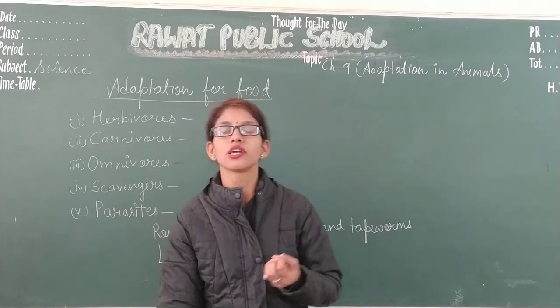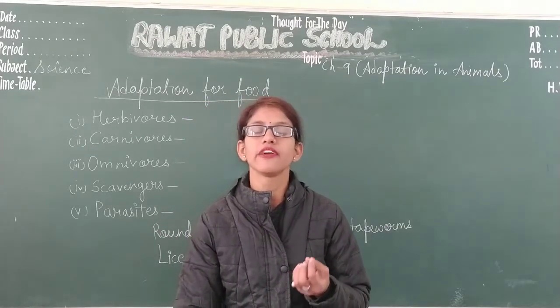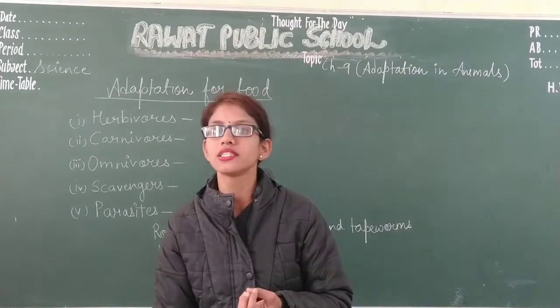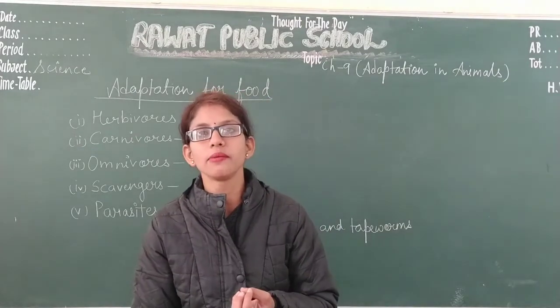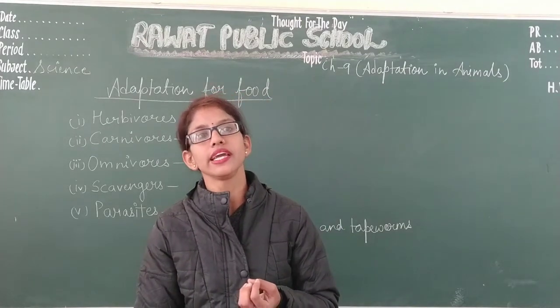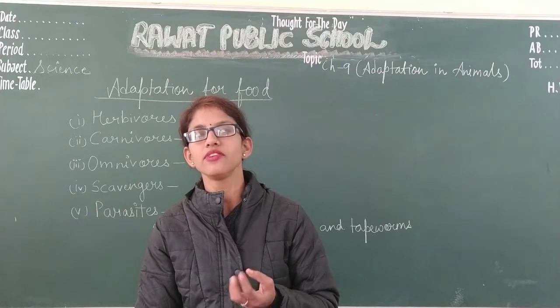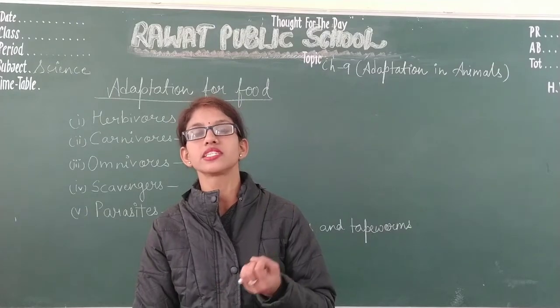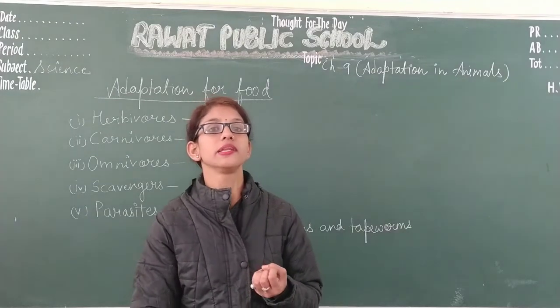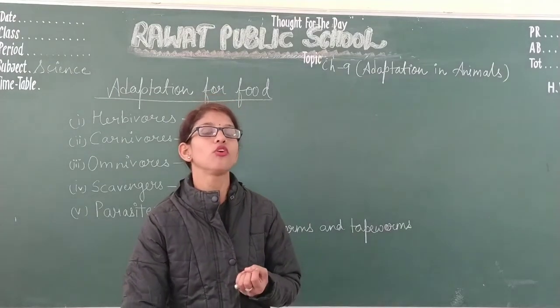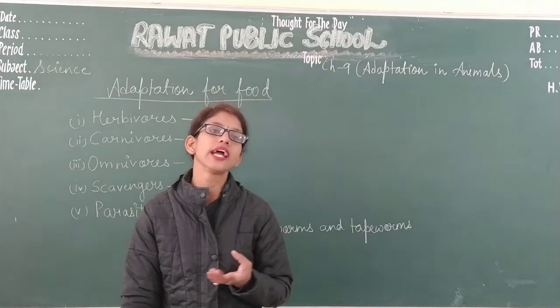The five types are: terrestrial animals, aquatic animals, amphibian animals, arboreal animals, and aerial animals. Terrestrial animals are the animals that live on land.